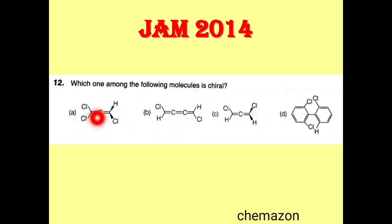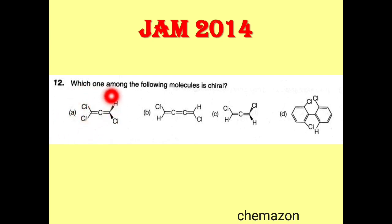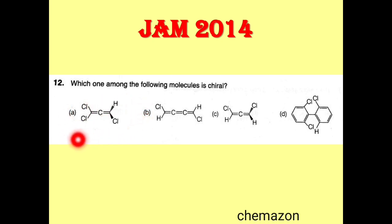For the first option, our chirality condition states that on one particular side of an allene molecule two similar groups should not be present. But here there are two chlorine groups which are the same, so a plane of symmetry passes through this molecule, making it achiral.